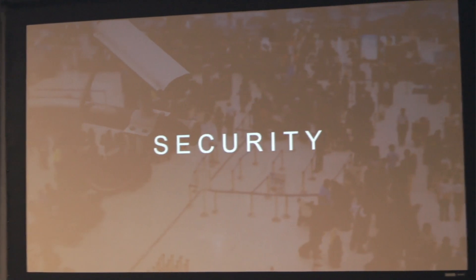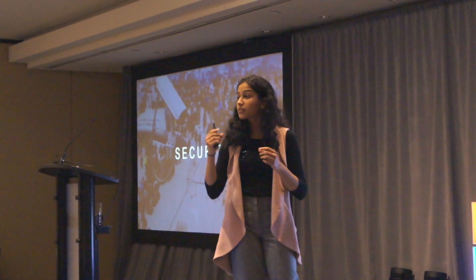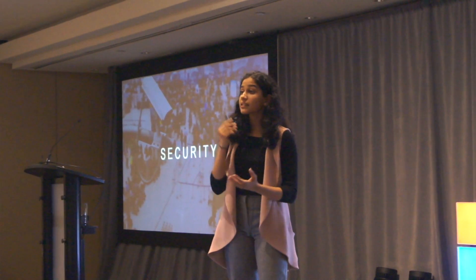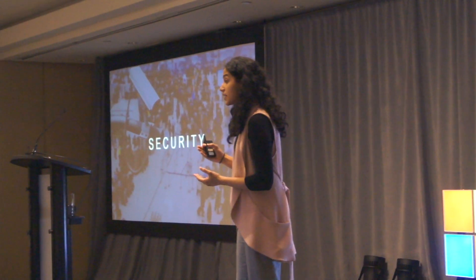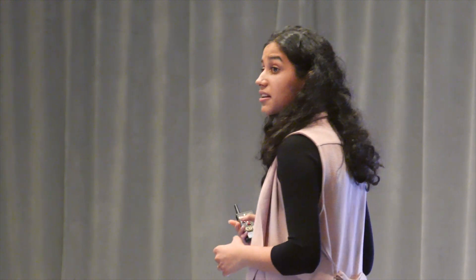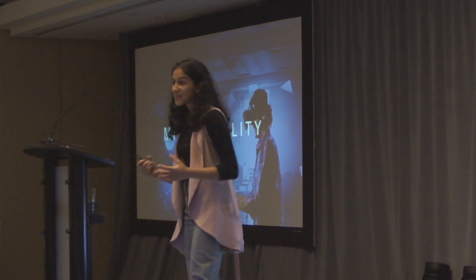Another application of computer vision with huge impact is integration within security and surveillance cameras. We can train an object detection algorithm to identify dangerous objects and suspicious movements from humans, implement it in surveillance systems, and have it identify at an extremely fast pace these objects and people, sending an alert instantaneously to authorities.